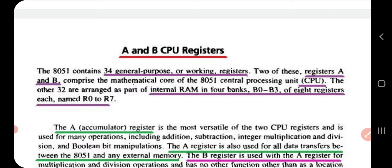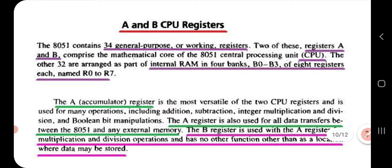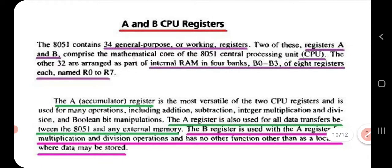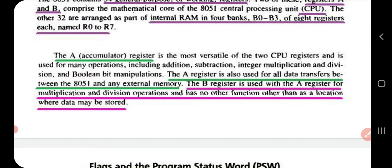The A and B CPU registers are next. The 8051 has 34 general-purpose working registers. Registers A and B comprise the mathematical core of the 8051 CPU. The other 32 are arranged in internal RAM in four banks (B0, B1, B2, B3), each containing eight registers named R0 to R7. The accumulator A is the most versatile CPU register, used for mathematical operations such as addition, subtraction, multiplication, division, and Boolean/bit manipulations, and for all data transfers between the 8051 and external memory. Register B is used with A for multiplication and division operations, and otherwise serves only as a data storage location.